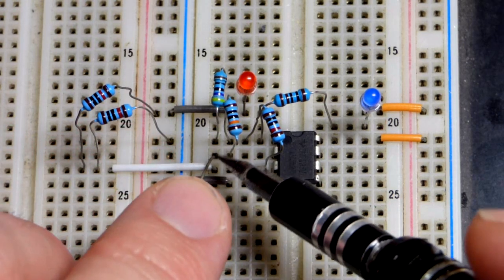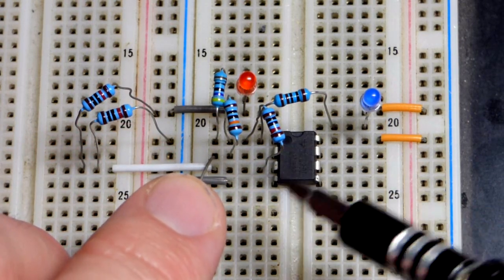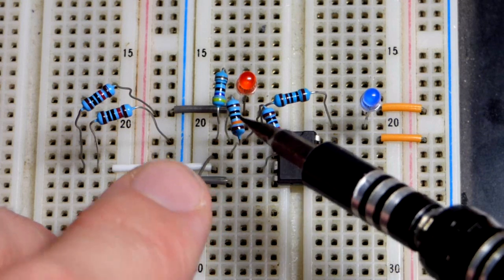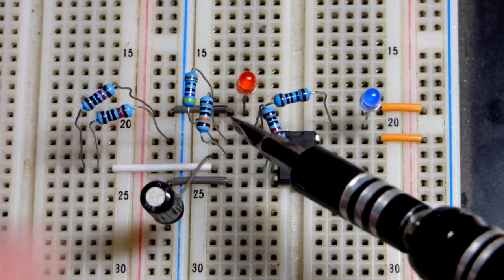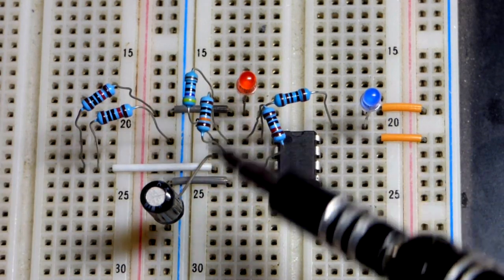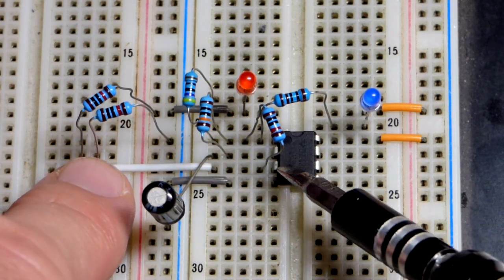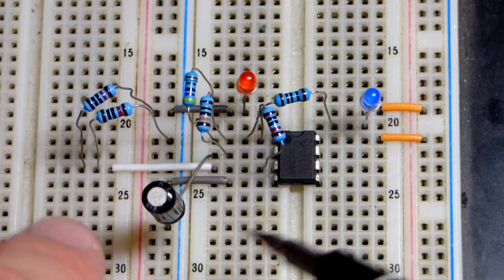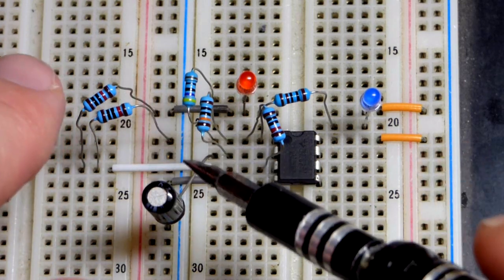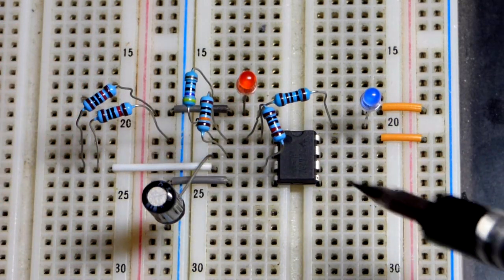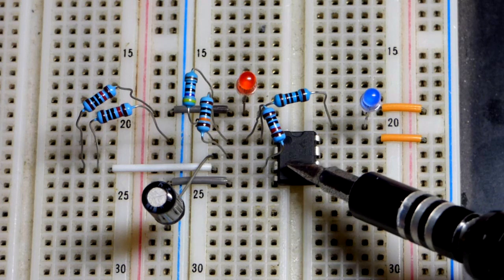That's 10 microfarad right there going to the inverting input. Then we have our negative feedback because it's going to the inverting input, 100,000 ohm resistor. Hopefully you can see that. Here we have a jumper to the non-inverting input, the plus right there.